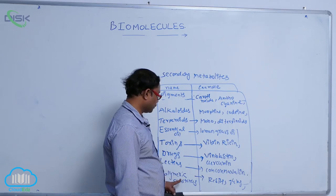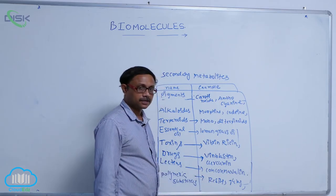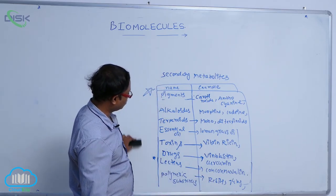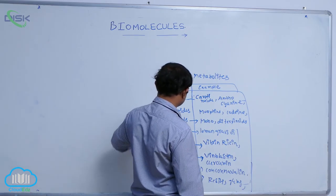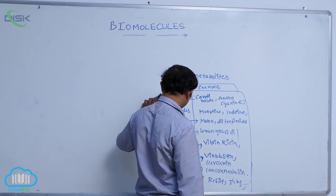Essential oils like lemongrass oil, toxins like vibrin and ricin, drugs like vinblastine and curcumin, lectins like concanavalin, and polymeric substances like resins and gums. So these are some secondary metabolites.